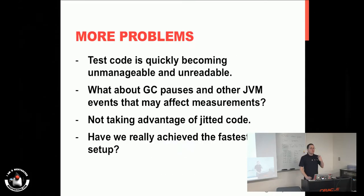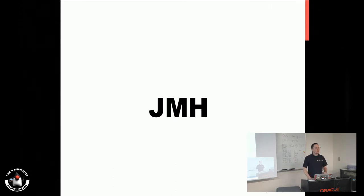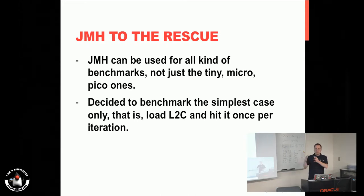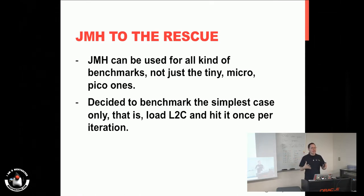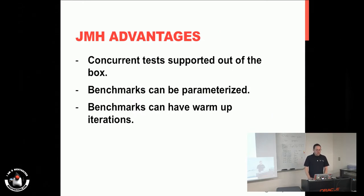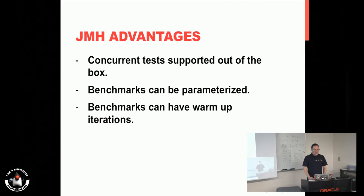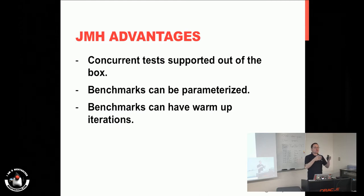We needed another tool to eliminate all those things, and that tool is called JMH — Java Microbenchmark Harness. We can use JMH to run very tiny benchmarks all the way up to macro benchmarks. These JPA tests can be seen as macro because we had to set up the container, the persistence, and the database. The advantages of JMH are that concurrency is supported out of the box, you can parameterize benchmarks — for example, supply a small or big data set for the same test case — and you can have warm-up iterations to ensure the JVM is ready, all JIT compilations have happened, so when you do real measurements it's like your production code has been running for a while.